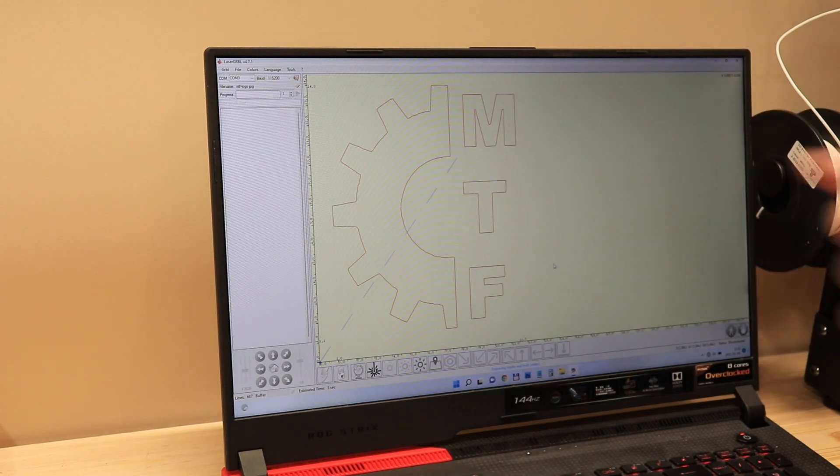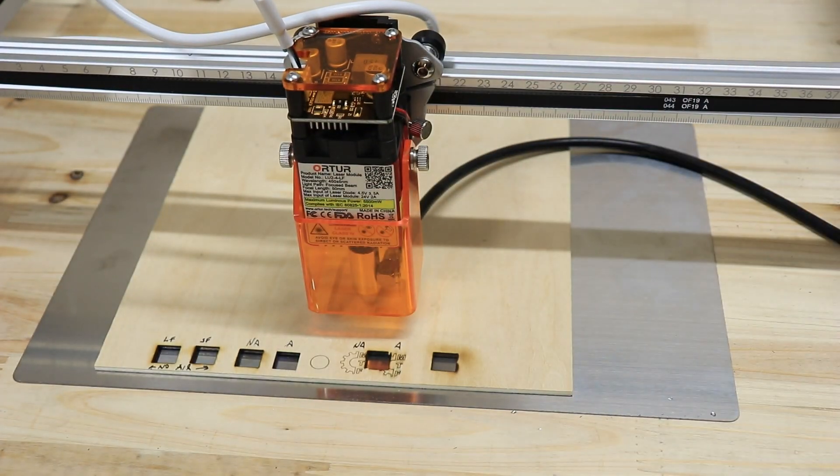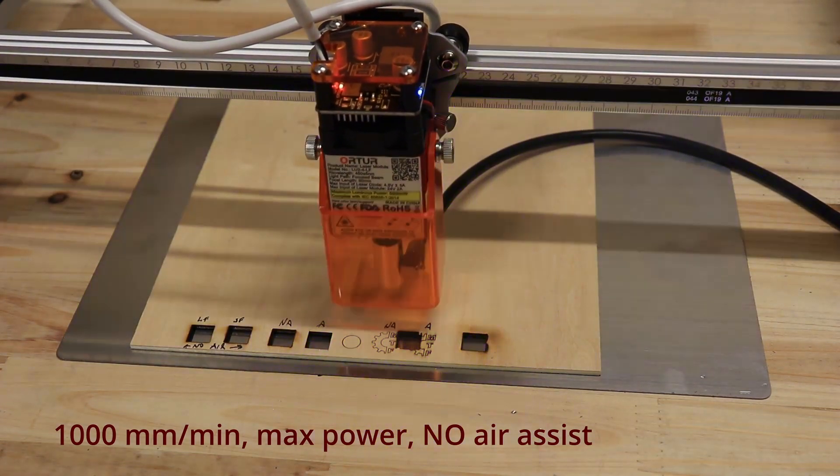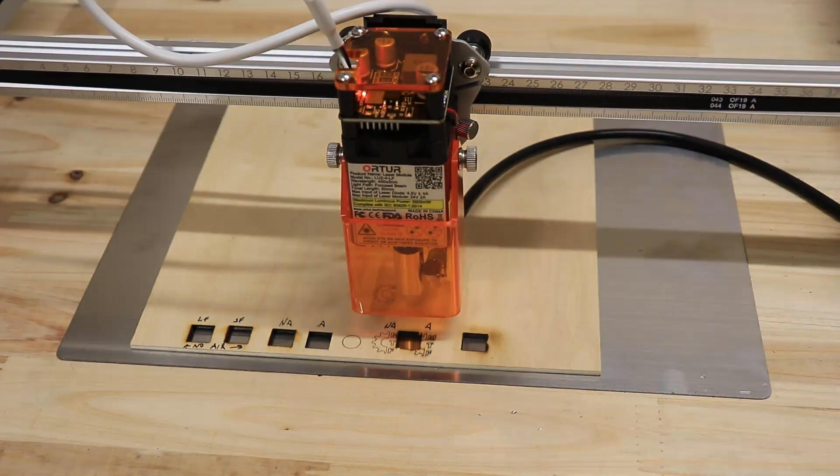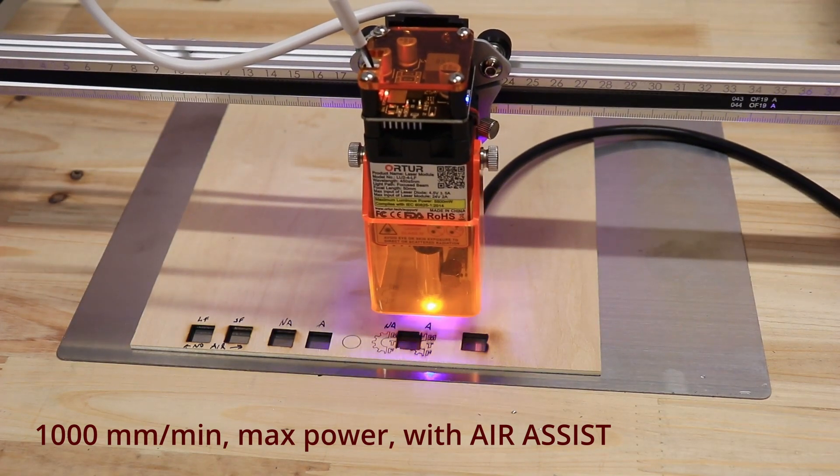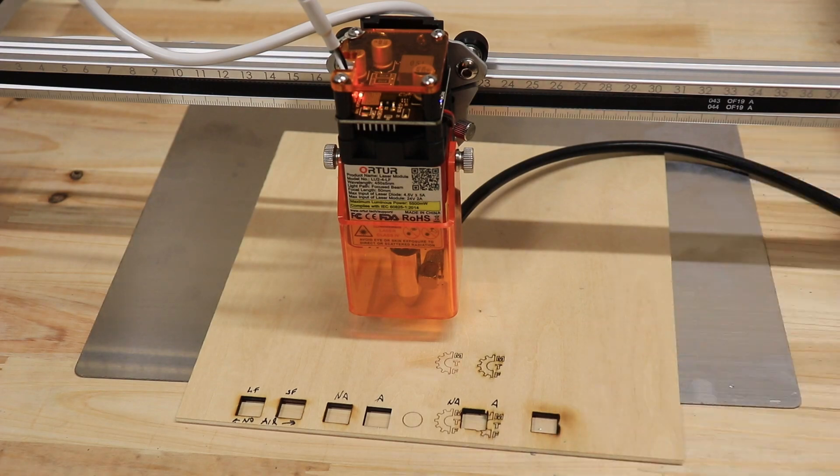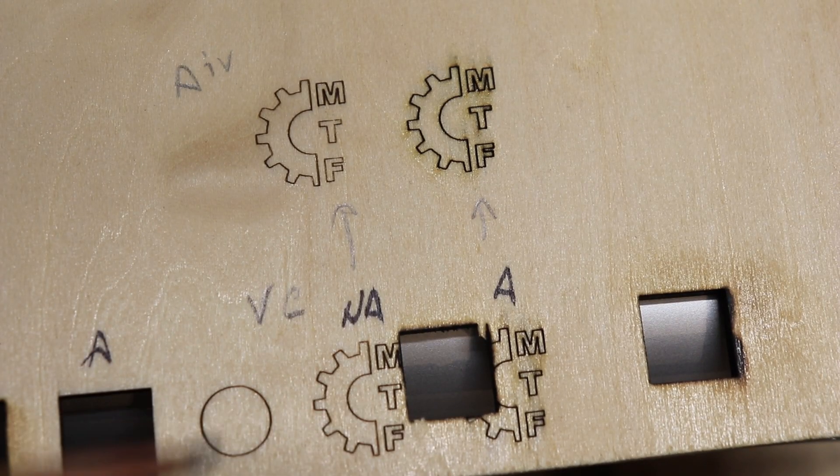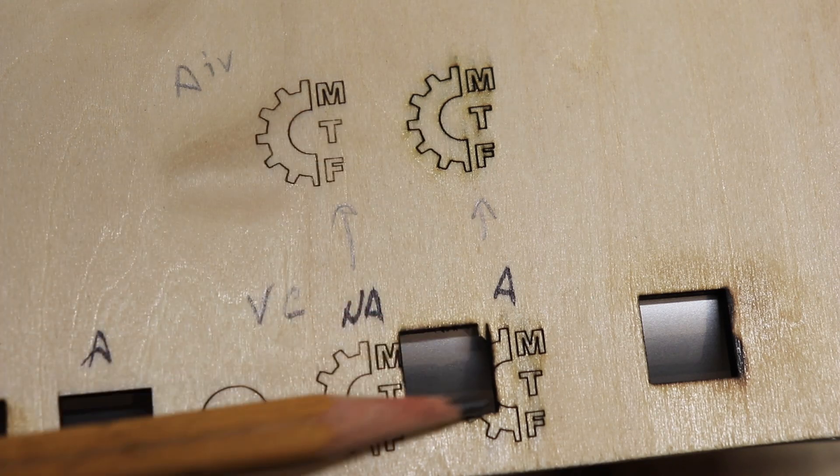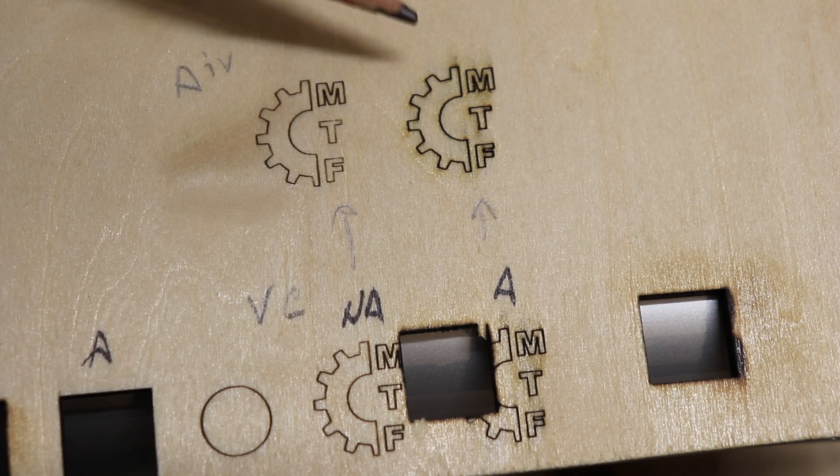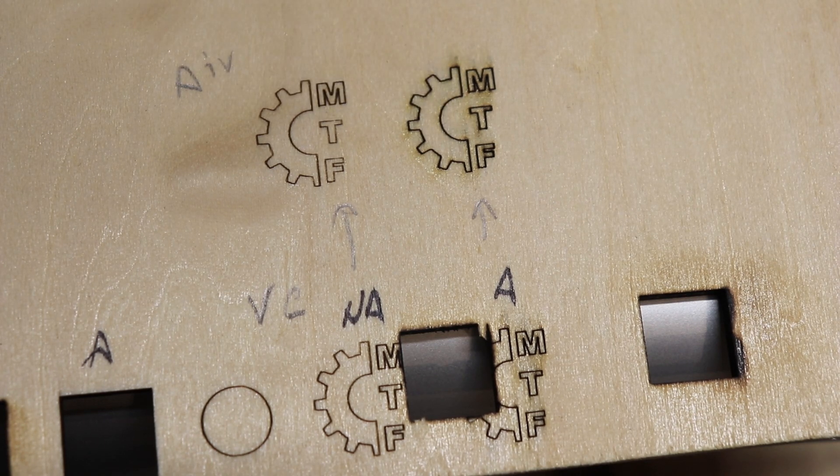So first I'm starting with engraving a logo, setting the focus on the plywood surface. And basically I got the same results as with the vacuum cleaner. These two are without air assist, and this is with air assist. Only here from the other side I cut this square out. Basically, as you can see, with the air assist the engraving is uglier. I have more smoke around the lines. Now let's do some cutting.